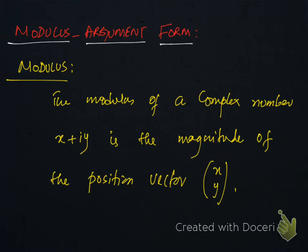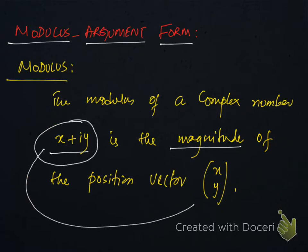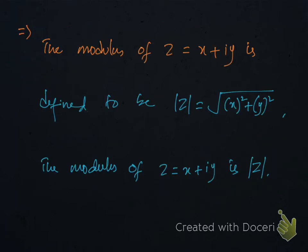The modulus of a complex number x plus iy is the magnitude of the position vector xy. So if we need the modulus of this number we need to take the magnitude of this. The modulus of z is defined to be modulus z equals under root x square plus y square. This is the way we find magnitude in vectors.